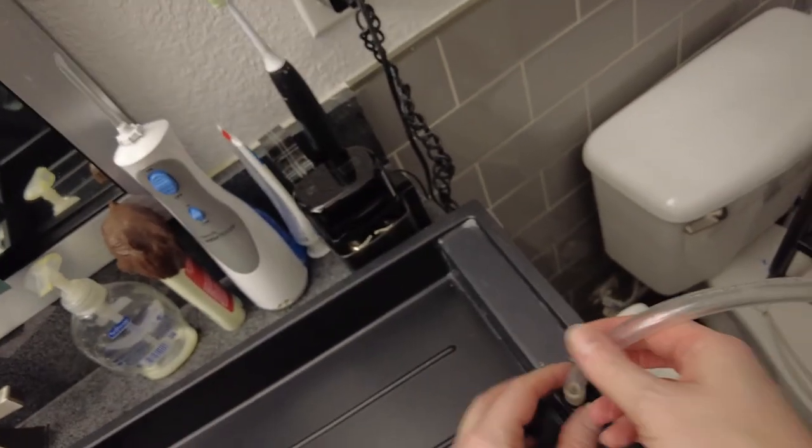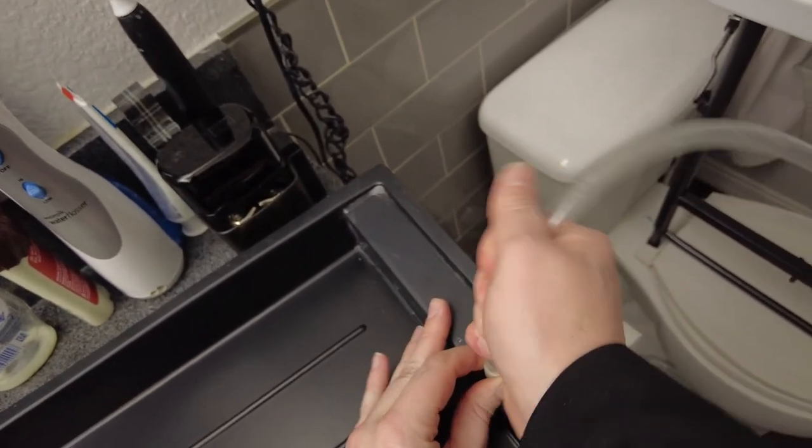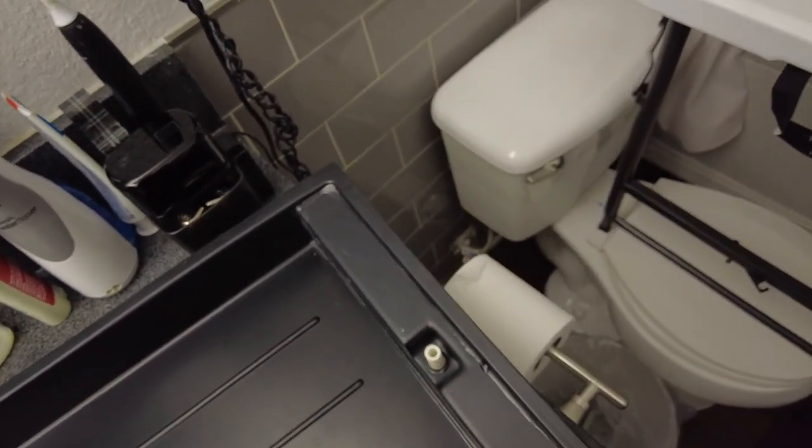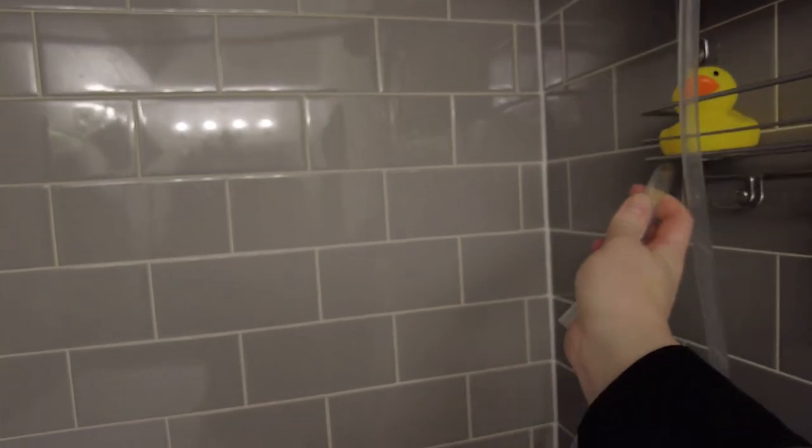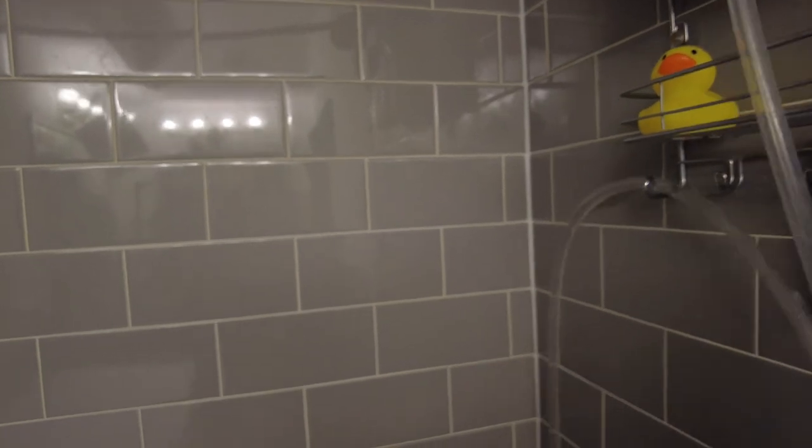When we're done with the washer we just pull this up and then we have our shower caddy over here and we just loop our extra hose right over that.